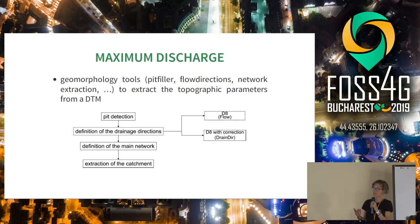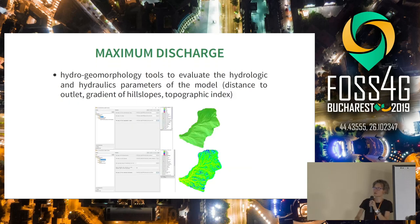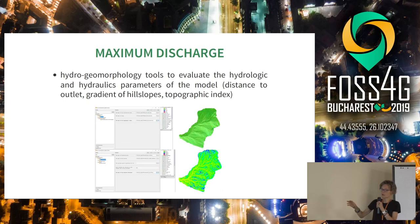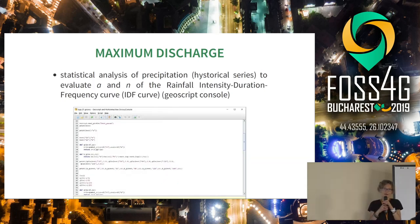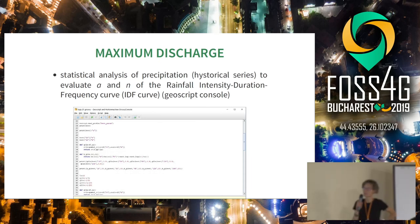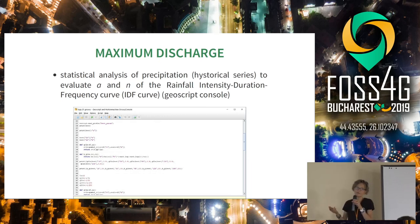To evaluate maximum discharges, it is first necessary to start with some geomorphology tools to extract topographic parameters from the DTM, in particular flow direction, the network, and other geomorphological parameters. These parameters can be used to evaluate hydraulic and hydrologic indexes like the gradient of the hillslopes, the topographic index, and the distance to outlet. Then we need either step-by-step precipitation or statistical analysis, specifically the coefficients a and n of the rainfall intensity-duration curve, which can be evaluated using a script in the GeoScript console.